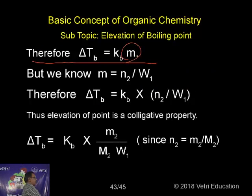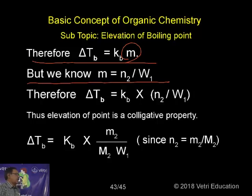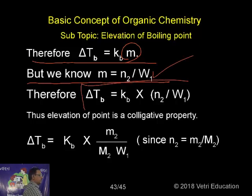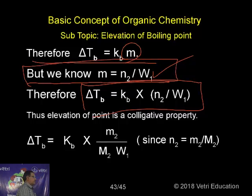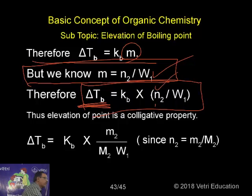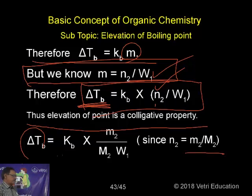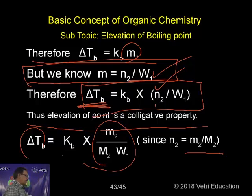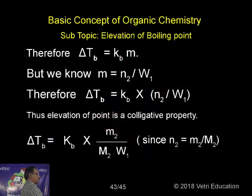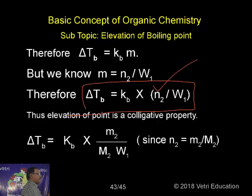From the definition of molality — the number of moles of solute dissolved in one kilogram of solvent — we substitute N₂/W₁ into the equation, giving ΔTb = Kb × (W₂/M₂×W₁), since N₂ = mass/molecular weight. From this equation we see that higher the number of particles, higher will be the elevation of boiling point; lower the number of particles, lower will be the elevation of boiling point.